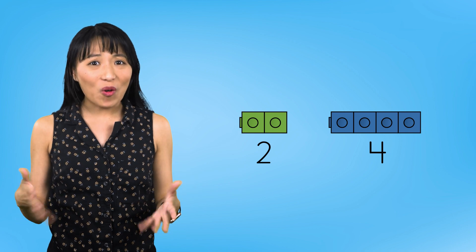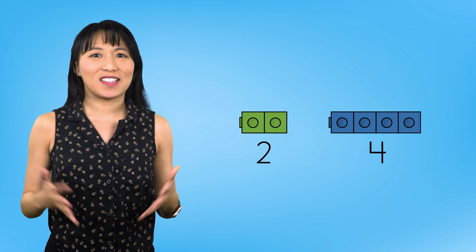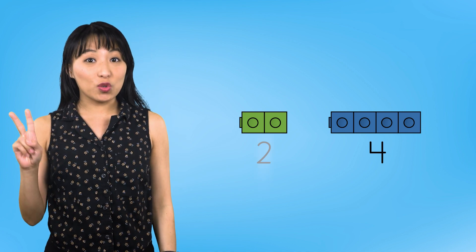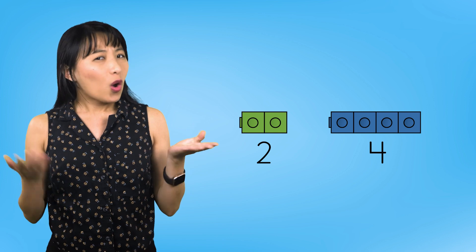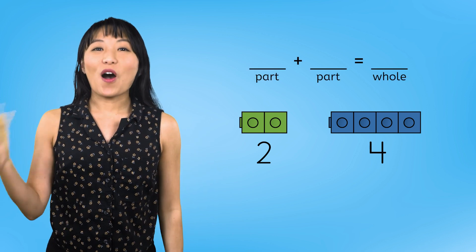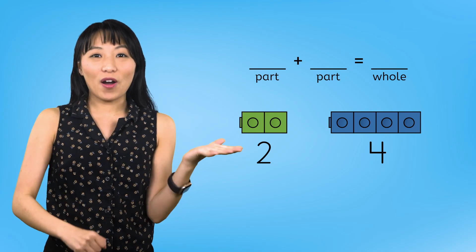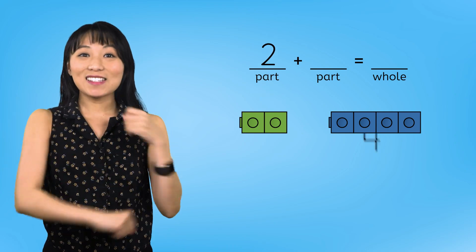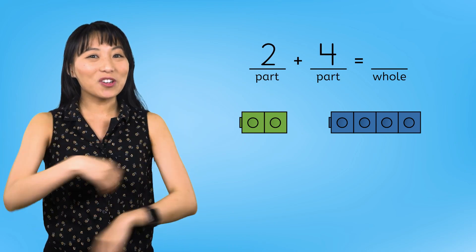Here are our 2 parts. 2 here, and 1, 2, 3, 4 here. Wow! We are getting better at this composing numbers thing. We found a new way to make 6, 2 and 4. What will our addition sentence say? Part plus part equals whole. 2 plus 4 equals 6.